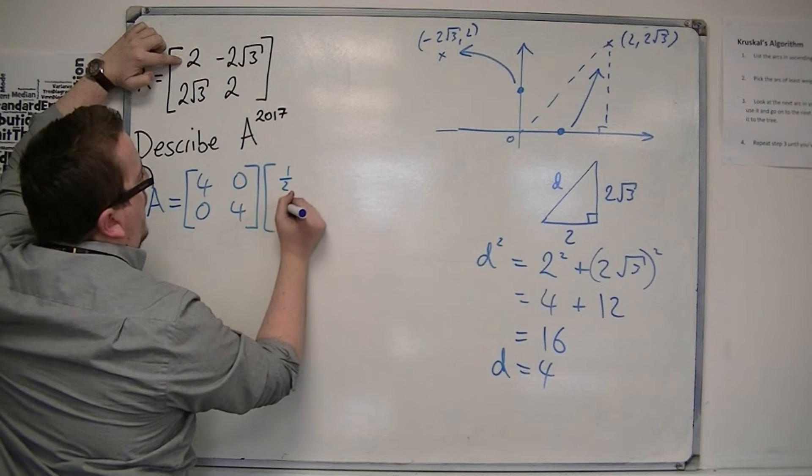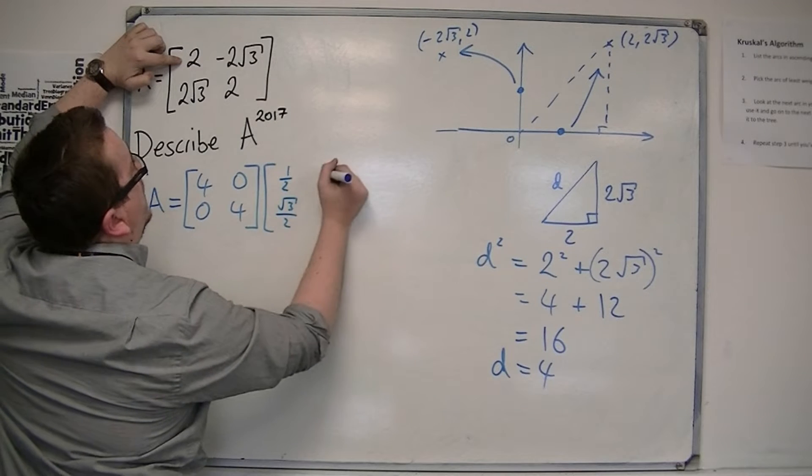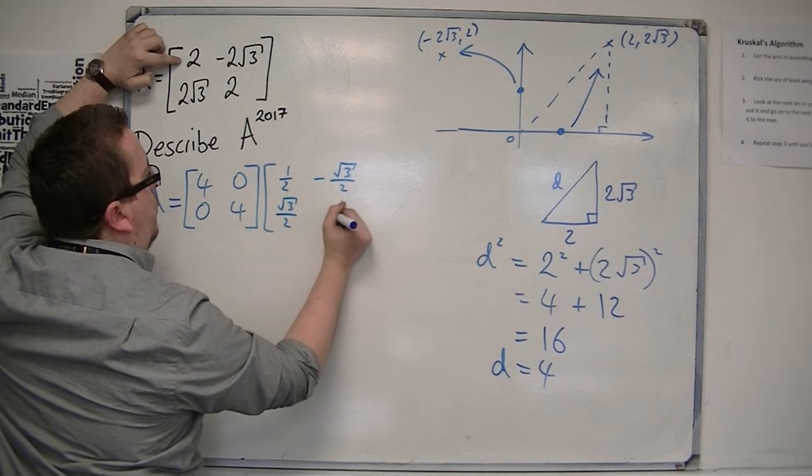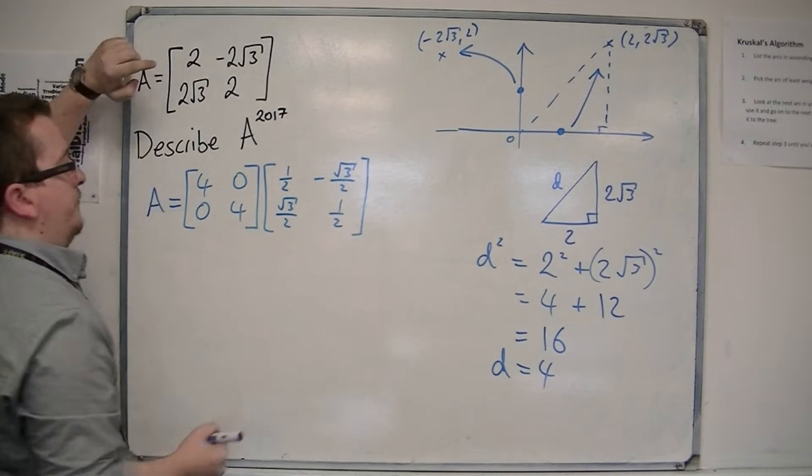so I get 1 half, root 3 over 2, minus root 3 over 2, and 1 half.